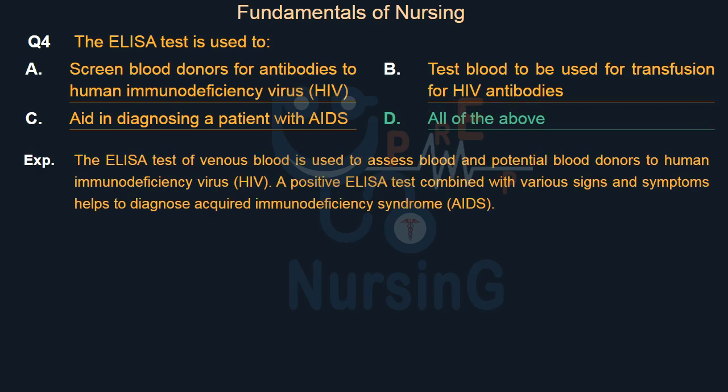The ELISA test of venous blood is used to assess blood and potential blood donors for human immunodeficiency virus (HIV). A positive ELISA test combined with various signs and symptoms helps to diagnose Acquired Immunodeficiency Syndrome (AIDS).